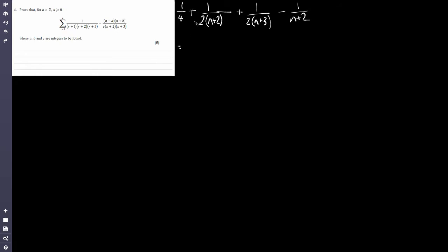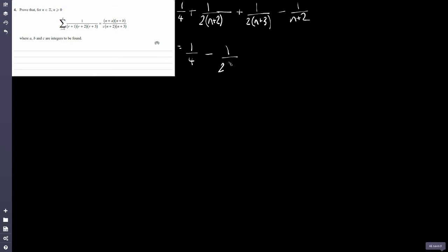The half minus half cancels to zero, leaving: 1/4 plus 1/(2(n+2)) plus 1/(2(n+3)) minus 1/(n+2). Getting a common denominator for the (n+2) terms: we have 1/(2(n+2)) minus 1/(n+2), which gives minus 1/(2(n+2)). So we have: 1/4 minus 1/(2(n+2)) plus 1/(2(n+3)).